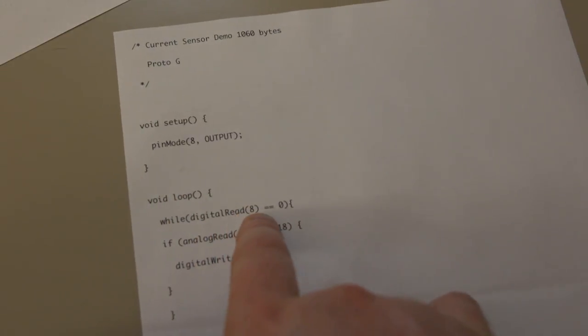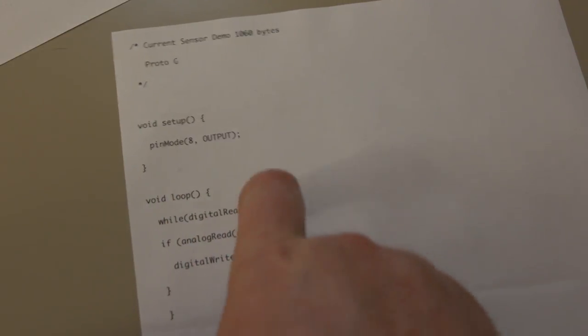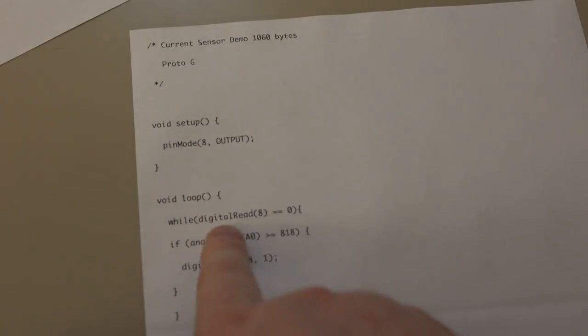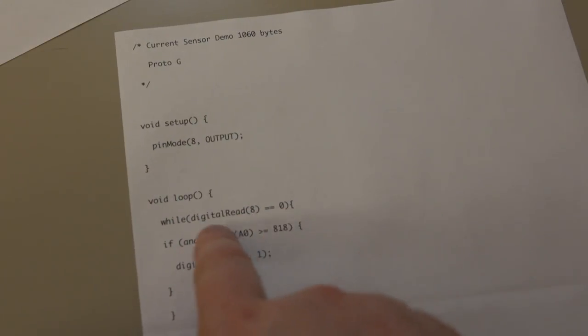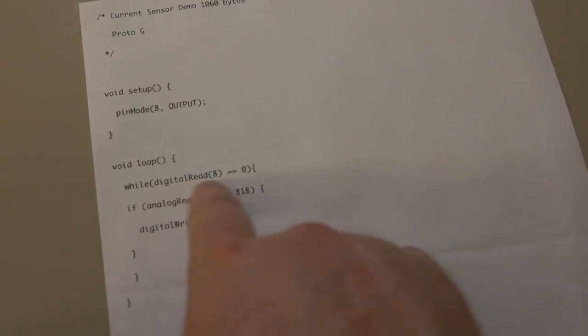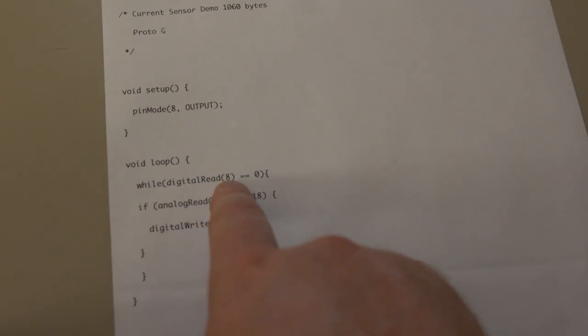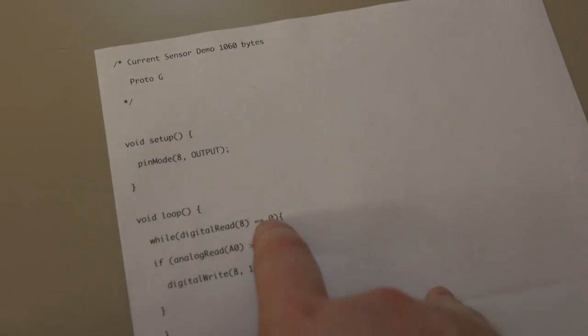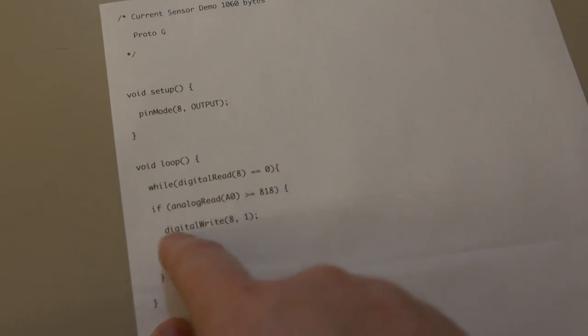And while digital read 8, so this is going to check the status of that 8. While it's low, run this. So it's going to do the same thing as the other program did with the fuse state. But it's just doing it directly without any variables or anything like that. So while the digital read of 8 is low, we're going to run this little snippet.